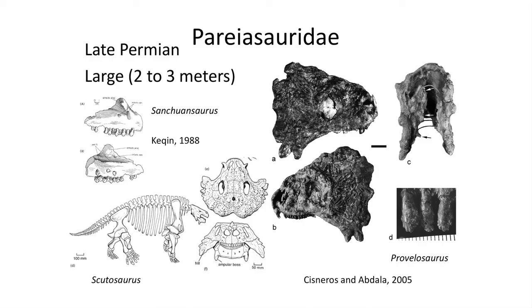The next group are the very large Pareiasauridae, known primarily from Russia but found throughout Asia, South America, and South Africa. These large parareptiles grew to over 2-3 meters in length and had well-ossified bony skulls. Their grotesque bodies were supported by primitive shoulders and pelvic girdles, making them tower over other reptiles living during the Permian. They are herbivores with peg-like teeth useful for cropping vegetation, with large bodies to facilitate a lengthy digestive tract to break down cellulose.